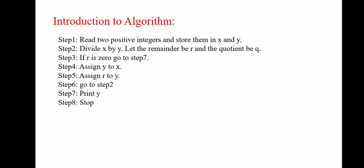But else, if R is not 0, then step 4 is assign Y to X, assign R to Y and go to step 2. So repeat the same process. This is the algorithm for finding greatest common divisor.